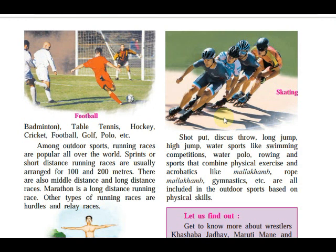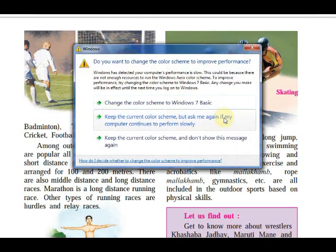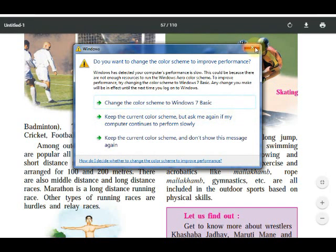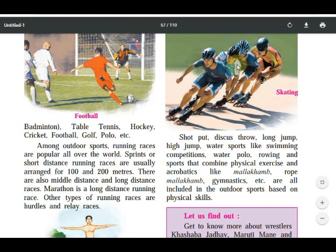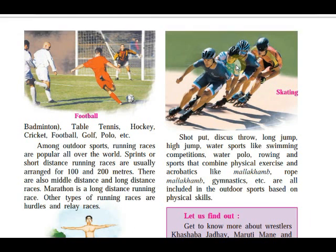We know how much importance is given to running events in the Olympics. Sprints or short-distance running races are usually arranged for 100 and 200 meters. There are also middle-distance and long-distance races. A marathon is a long-distance running race. Other types of running races include hurdles and relay.